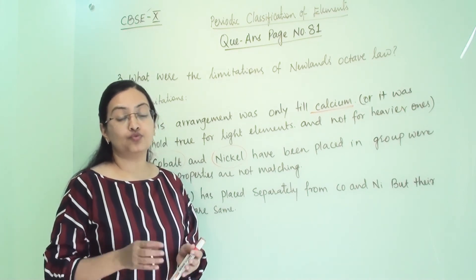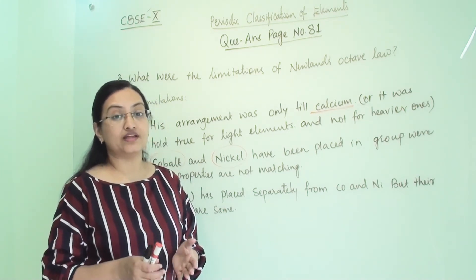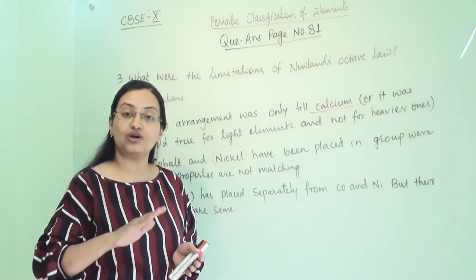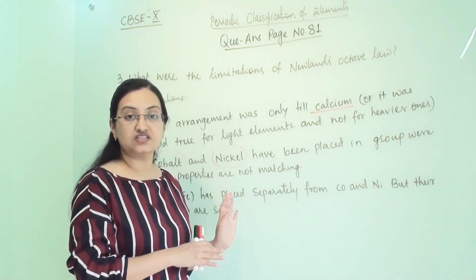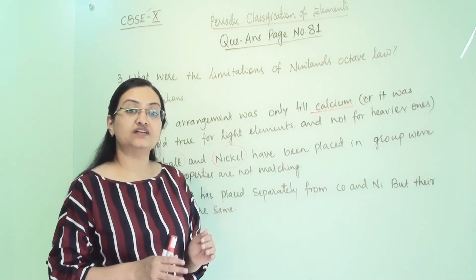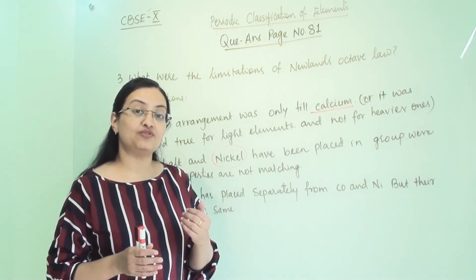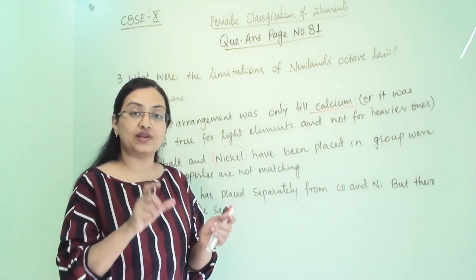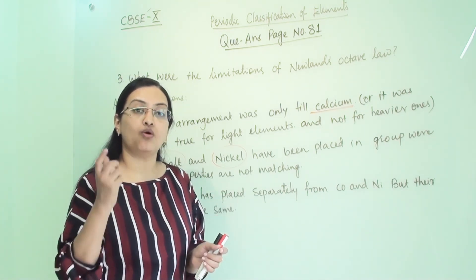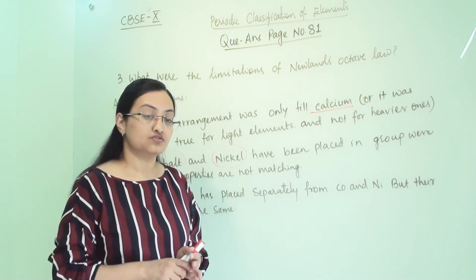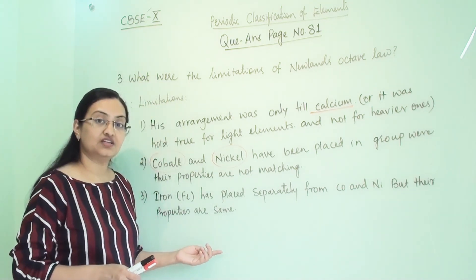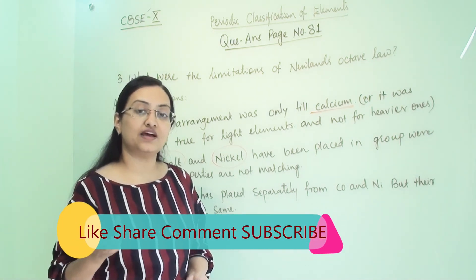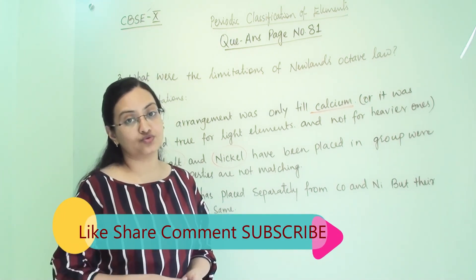A third limitation is that the noble gases were discovered much later, after Newland's octave law was proposed. Once the noble gases were found, the law became irrelevant because there was no place in the arrangement where all the noble gases could be fit in.